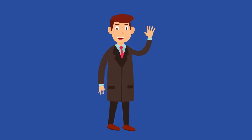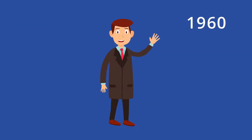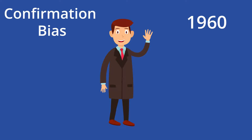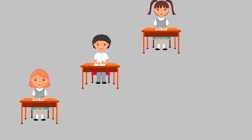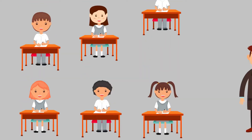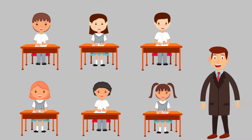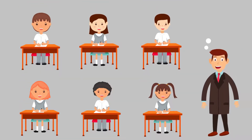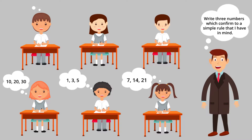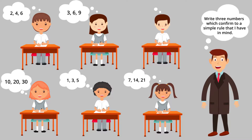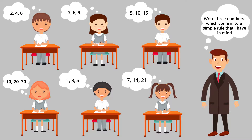In an experiment he published in 1960, Peter Watson, an English psychologist, coined the term confirmation bias. In this experiment, the participants were told by the experimenter that they would be given three numbers which conformed to a simple rule that he had in mind.